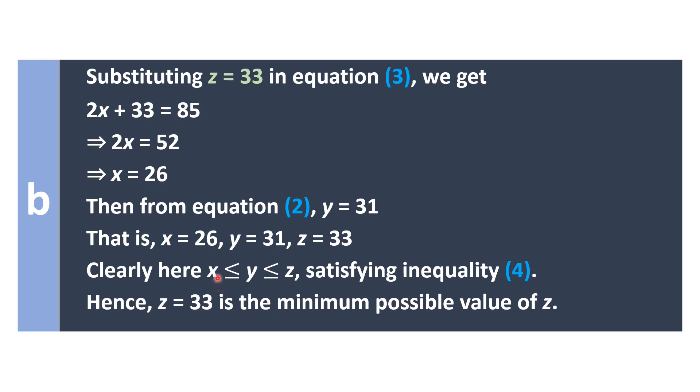Clearly, X is less than or equal to Y which is less than or equal to Z. Therefore, inequality 4 is satisfied. Hence, Z equals 33 is the minimum possible value of Z. The right answer to the question is option B.